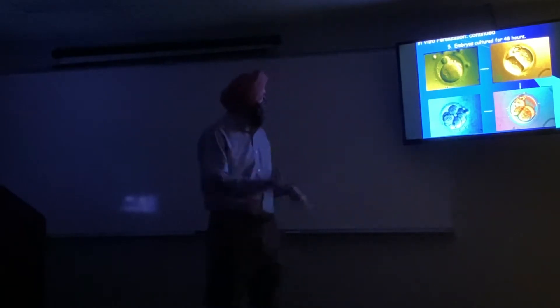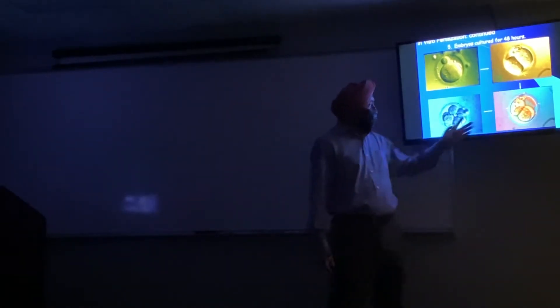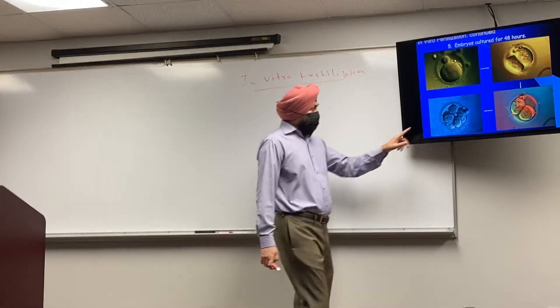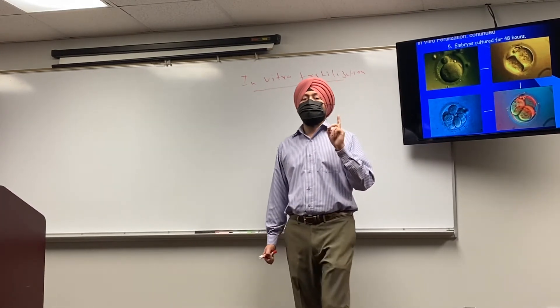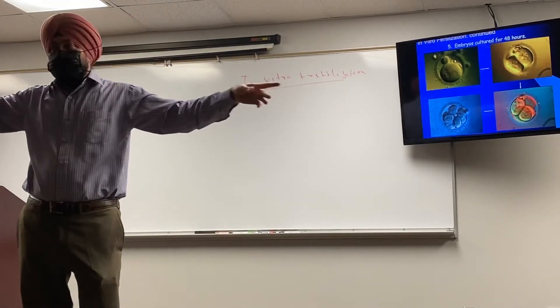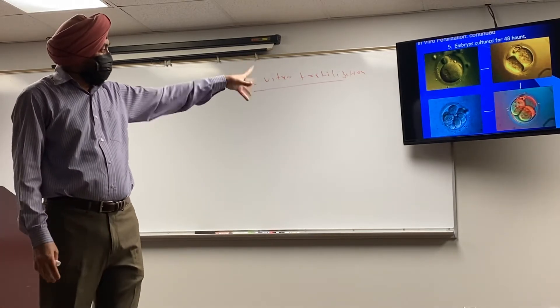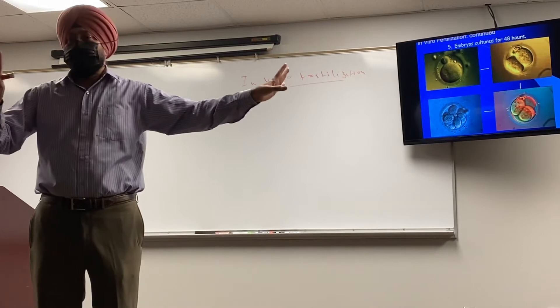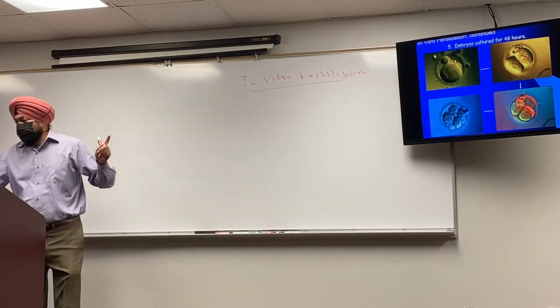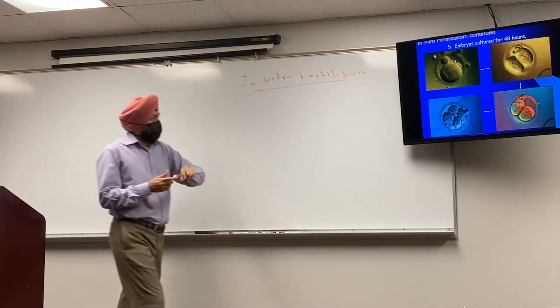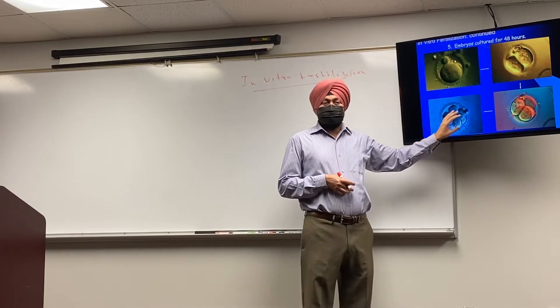One cell divides to give two cells, then four, then eight cells. The eight-cell stage is critical: at this point, each of those eight cells has the capability to give a new human being. If you separate them, each cell can give you a new individual. But that capability is only up to this stage. In this procedure they may have 24 embryos formed at the eight-cell stage.